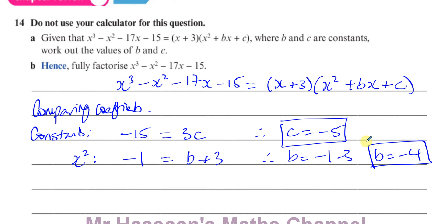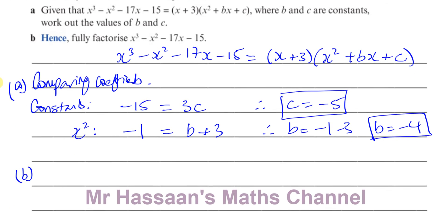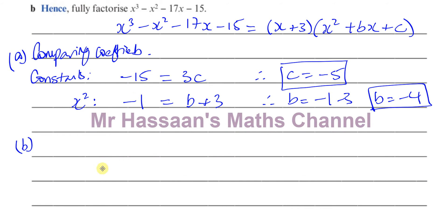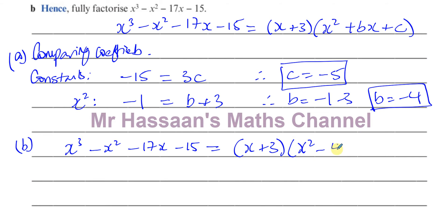So we've found c equals negative 5 and b equals negative 4. That completes part a. For part b — 'hence fully factorize x cubed minus x squared minus 17x minus 15' — we now know it equals (x plus 3)(x squared minus 4x minus 5). We can verify: expanding gives minus x squared, minus 17x, and minus 15, which matches.